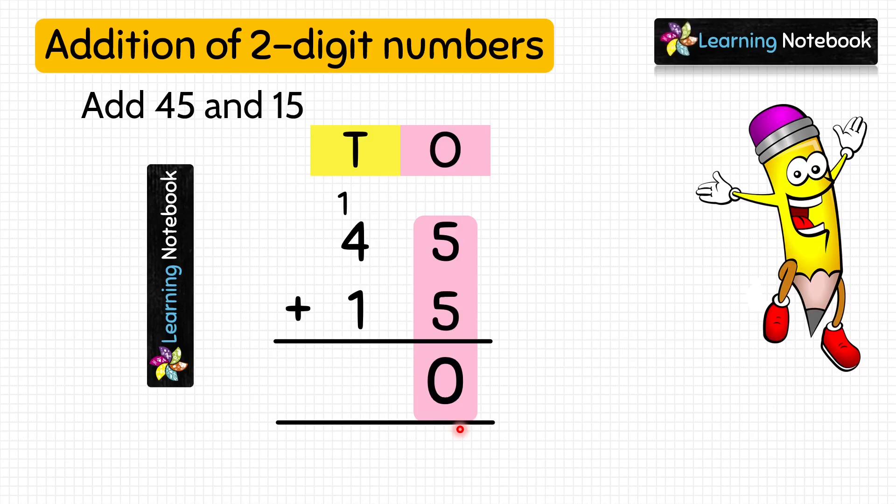Now we will add the digits at tens place. Here students, you have to make sure that you add this carry 1 here. So we will do 1 carry plus 4 plus 1, which equals 6. So the answer is 60. 45 plus 15 equals 60.